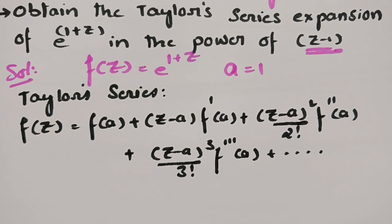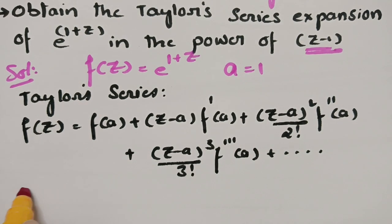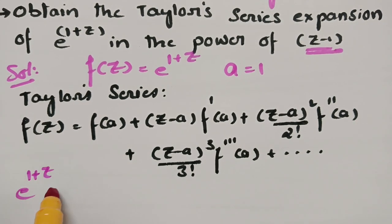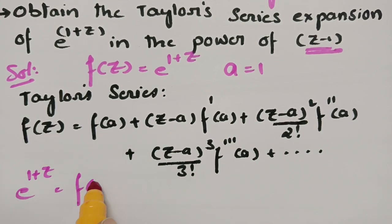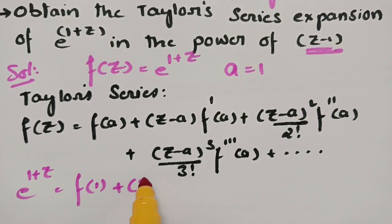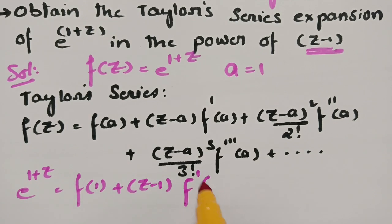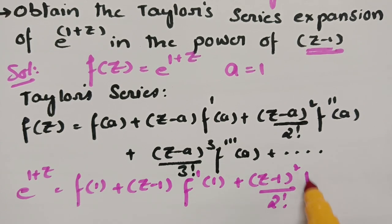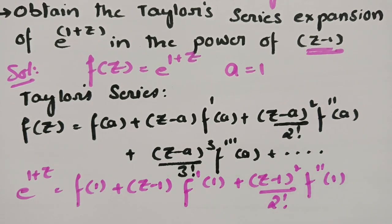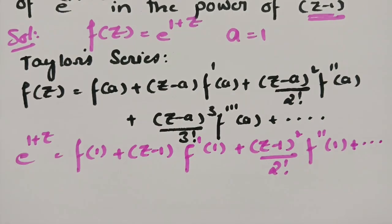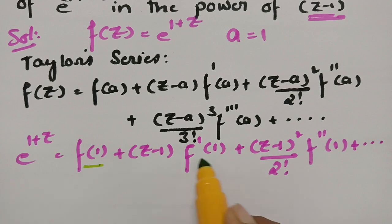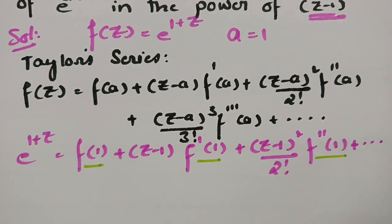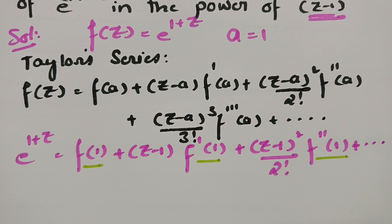If I substitute f of z as e power 1 plus z, here a is equal to 1. So this will be f of 1 plus f dash of 1 into z minus 1, plus z minus 1 whole square by 2 factorial into f double dash of 1, plus and so on. Now we need the values of f of 1, f dash of 1, f double dash of 1, and f triple dash of 1.